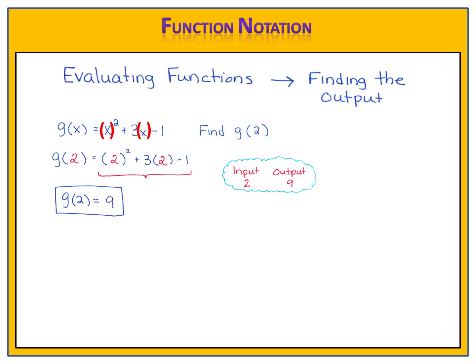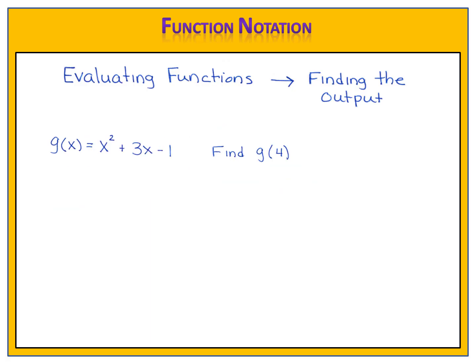Let's try a similar problem with the same function, but a different input. Let's use the same function, g(x) = x² + 3x - 1. And in this case, I'd like for you to find g(4). Remember, first put your variables in parentheses, then substitute the input, 4, in place of the x's, and then evaluate. Pause the video here, and come back when you're ready to check your work.